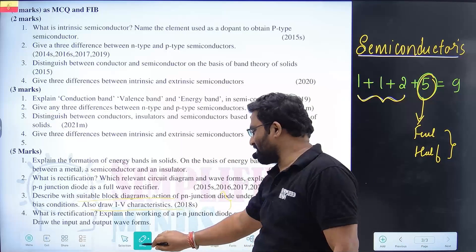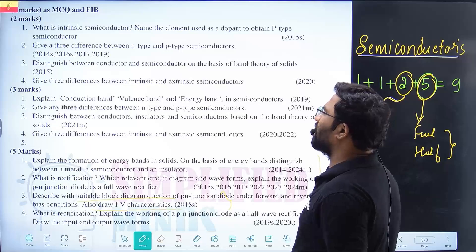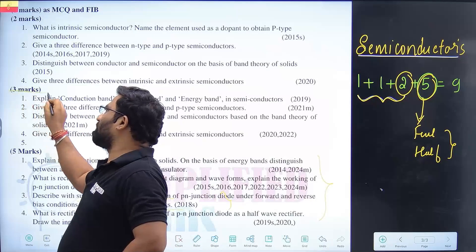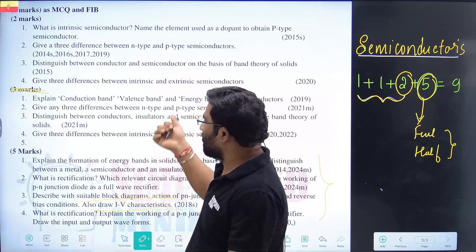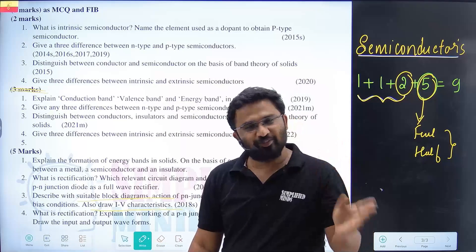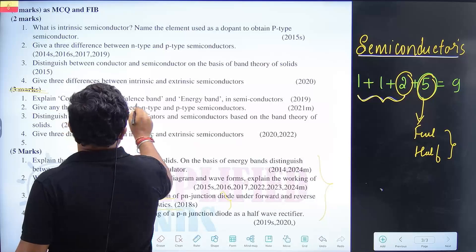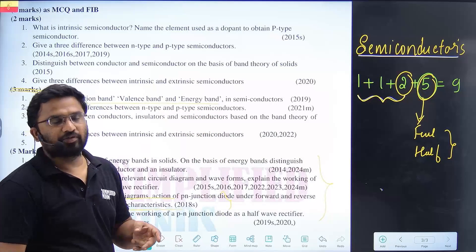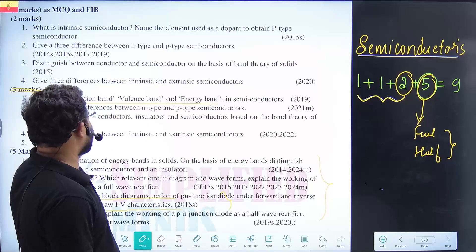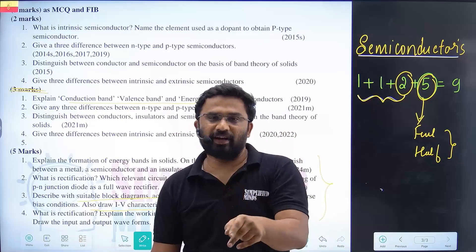We will do all the concepts in one shot. Coming to the two-mark and three-mark questions — most of the time they'll ask differences. In physics, two-mark and three-mark questions are interchangeable, since all three-mark content can be asked for two marks and vice versa. Most important topics include: conduction band, valence band, energy band explanation, and differentiate between insulators and conductors or insulators and semiconductors based on band theory.